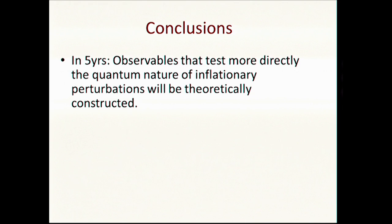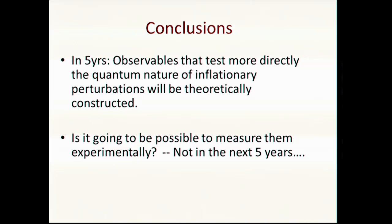I think perhaps we were tasked with the idea of predicting the future in five years. Perhaps in five years, we'll understand perhaps more sophisticated experiments where we can actually test Bell inequalities in a sharper way using cosmological observables, and will be theoretically constructed. Is it going to be possible to measure them experimentally? Almost for sure not in the next five years, but perhaps in 30 years. Everyone says that the big hope is the 21-centimeter tomography. We'll see what happens. Thank you.